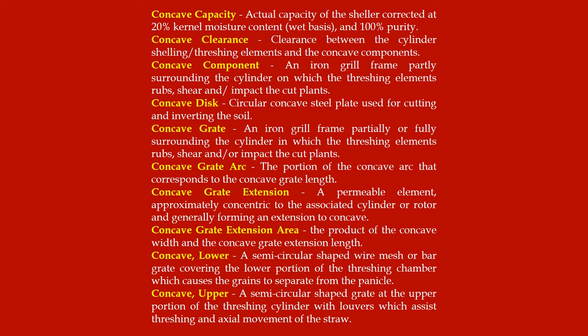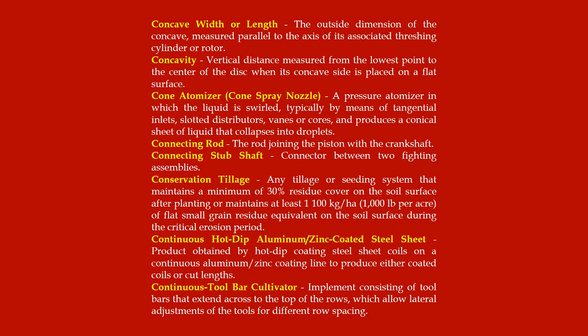Lower concave: a semicircular shaped wire mesh or bar grate covering the lower portion of the threshing chamber which causes the grains to separate from the panicle. Upper concave: a semicircular shaped grate at the upper portion of the threshing cylinder with louvers which assist threshing and axial movement of the straw. Concave width or length: the outside dimension of the concave measured parallel to the axis of its associated threshing cylinder or rotor.